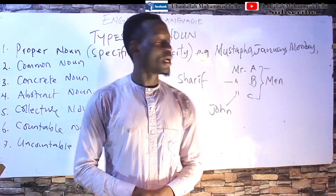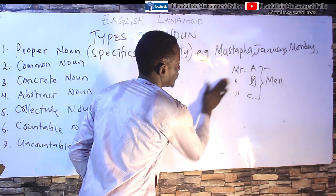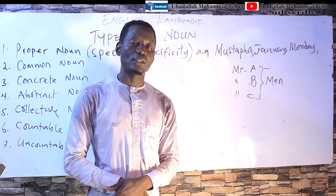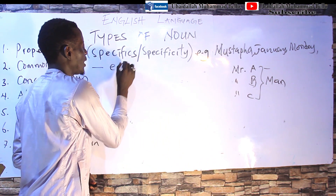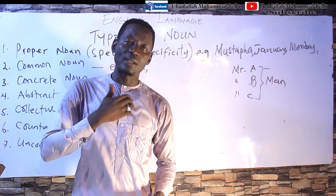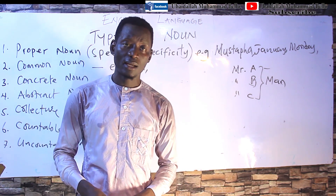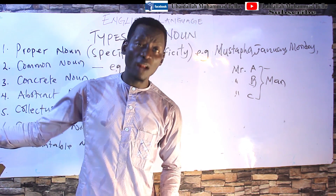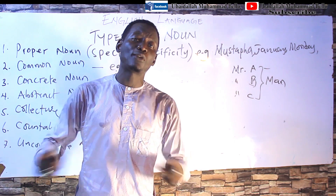Welcome back. Let's go to common nouns. For instance, we have Mr. A, Mr. B, and Mr. C. These three are different individuals, but we can call each and every one of them 'man.' So 'man' is an example of a common noun. The noun can refer to me, to you, or to any other male person. There is no specificity in the use of 'man' — it can be used to account for different individuals.